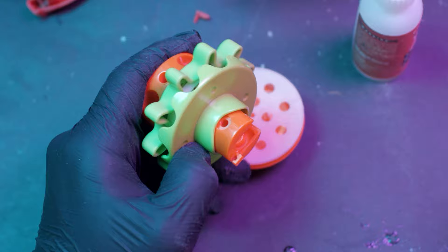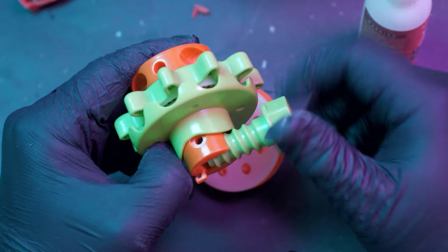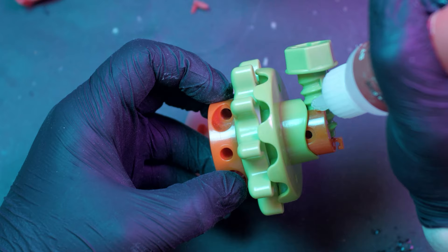While that dried, I made the spinny gear part of the gatling gun by putting a bunch of gear toys on this random part, which I have absolutely no memory of. Then I squished it all together with a big fat screw.